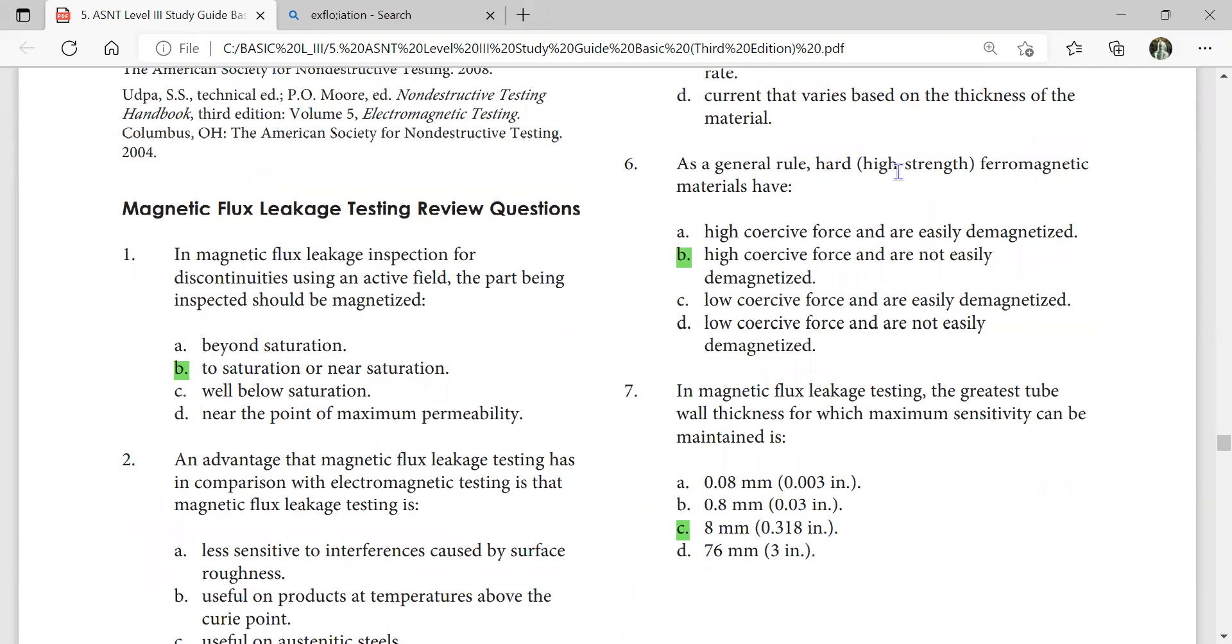As a general rule, hard high-strength ferromagnetic materials have high coercive force and are not easily demagnetized.